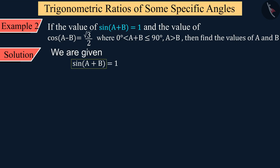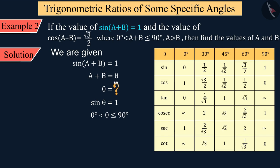We are given sin(A + B) = 1. We need to know for which value of θ, sin θ equals 1, where θ is greater than 0° and less than or equal to 90°. By looking at the table, sin 90° = 1, so the value of θ is 90°. We can write sin 90° in place of 1 on the right side of the equation.